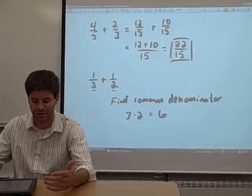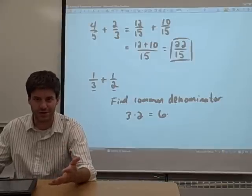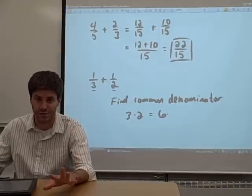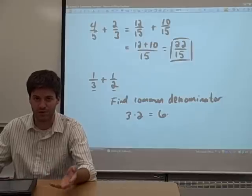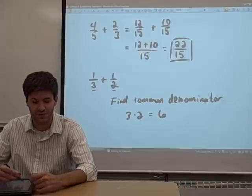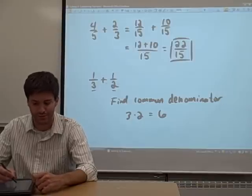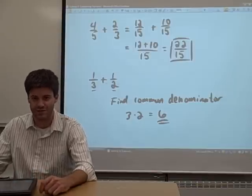That common denominator will work. Anytime you're looking for a common denominator, if you want to do it, it might not be the fastest way to do it, but if you want to do it in a way that will work every time, just take the two denominators, multiply them together. So our common denominator in this case is six.